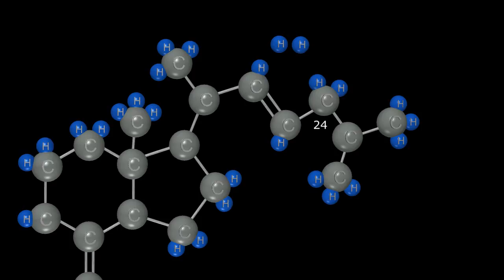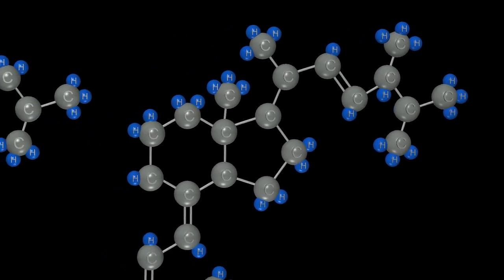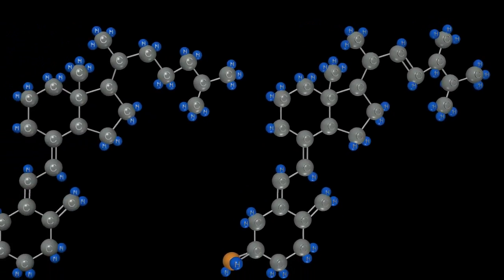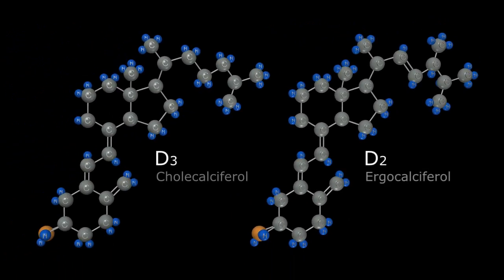Off of carbon 24, there is an additional carbon atom requiring four connections. One of these comes from the bond to carbon 24 itself, one from the hydrogen atom that was there previously, and we can use our two freed up hydrogen atoms from carbons 22 and 23 to complete the connections. So, from a molecular standpoint, the net difference between D2 and D3 is a single carbon atom with the chemical formula of D3 C27H44O, and D2 C28H44O.